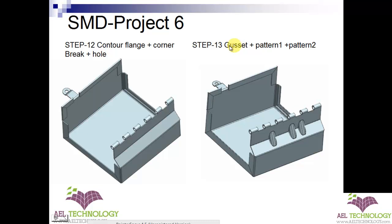After that is done, we will go to step 13 — gaskets. You can see that we have pattern 1 and pattern 2. We will create the first feature and then pattern it using pattern 1. In the second pattern, we will use the same first feature and pattern it at a different distance. We opted for 2 patterns because the pattern distance is different for each feature.